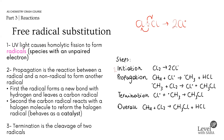The second step is propagation. Propagation is the reaction between a radical and a non-radical to form another radical. There are always two common steps. The first is that the radical forms a new bond with hydrogen — so chlorine will react with hydrogen to form HCl and leave a carbon radical.